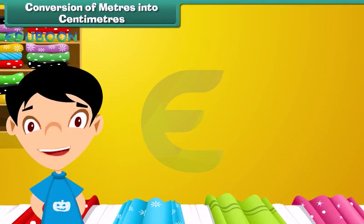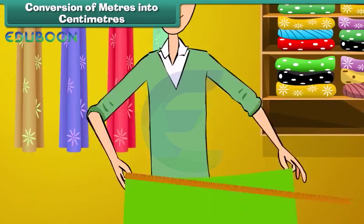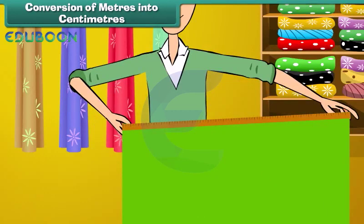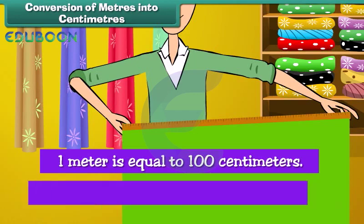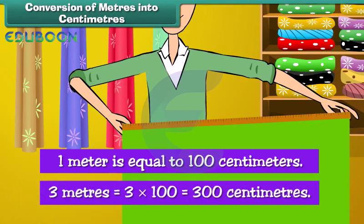Conversion of meters into centimeters. It is time to understand the relationship between meters and centimeters. We will then convert meters into centimeters. One meter is equal to 100 centimeters. Therefore, three meters is equal to 3 into 100, which equals 300 centimeters.